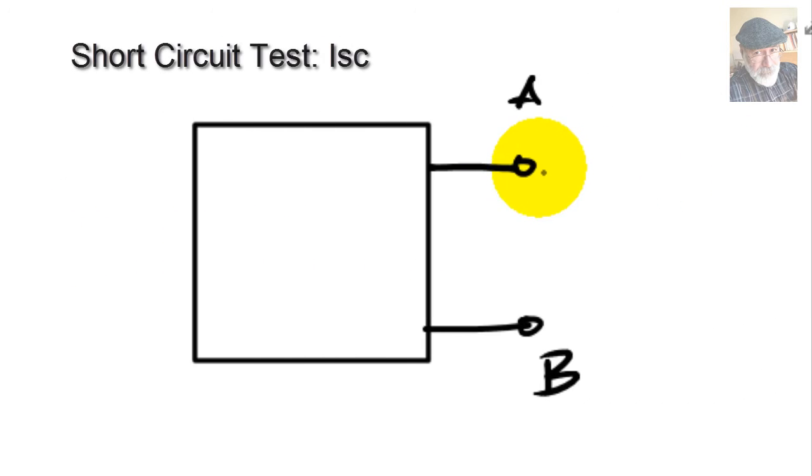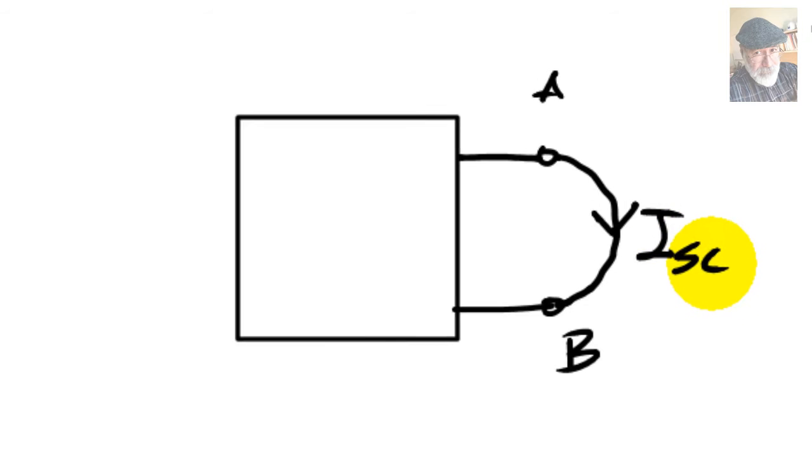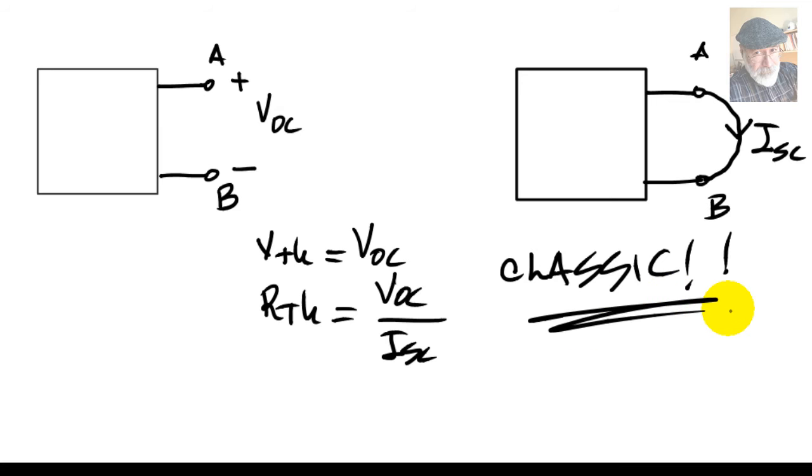And then we would short the port with a wire and compute what is the short circuit current flowing through that wire. We said that in that method, V Thevenin was directly the value of the open circuit test, and that R Thevenin would be the ratio between VOC and I short circuit. I'm going to use that classic method.